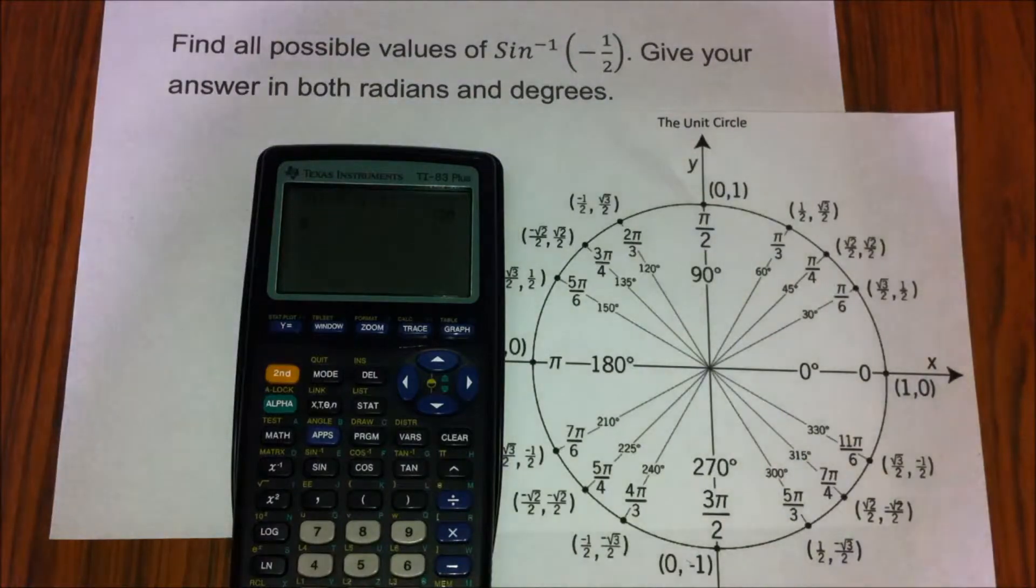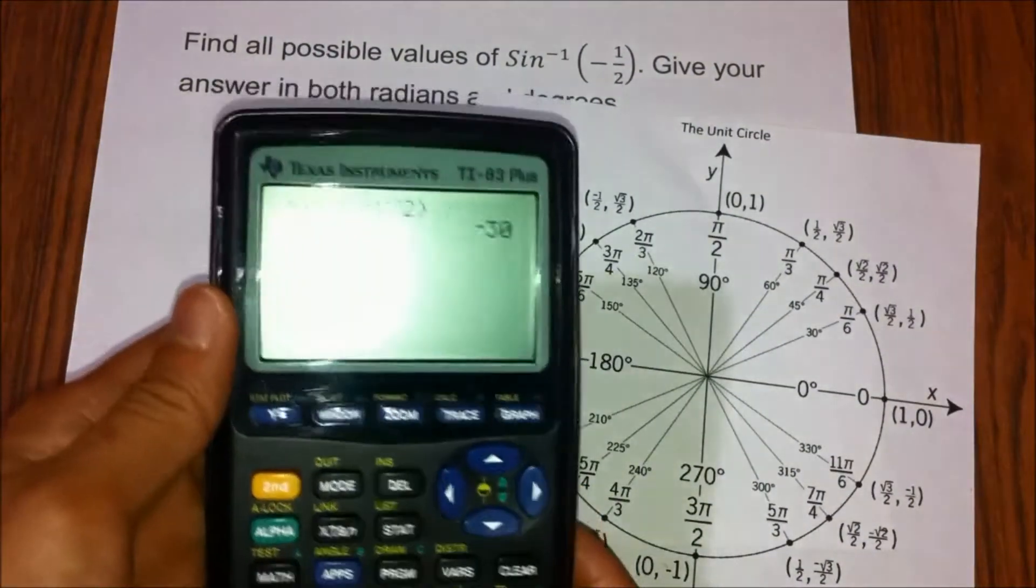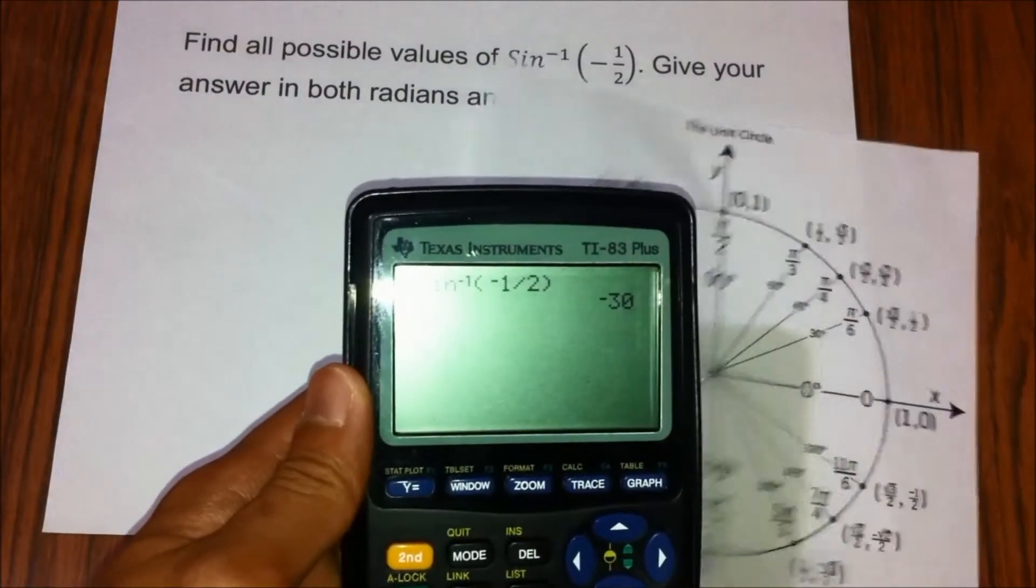So the result of this inverse sine is negative 30 degrees.